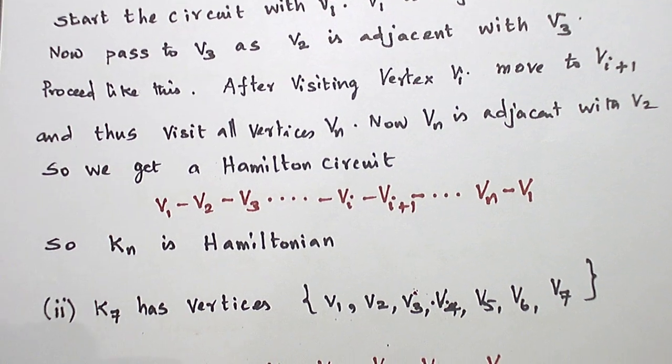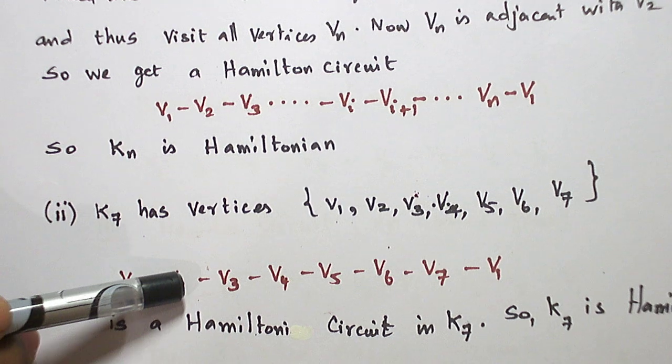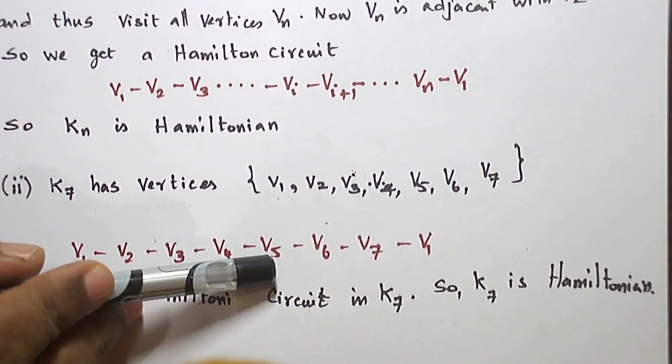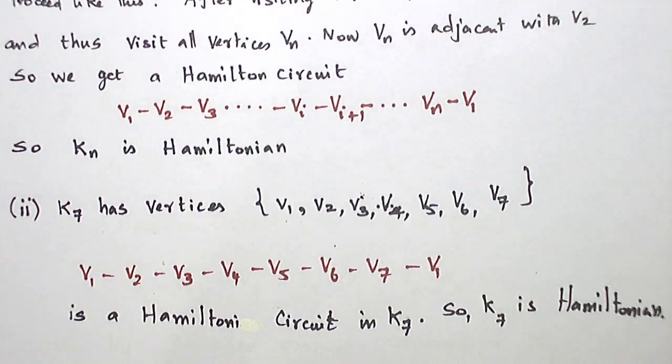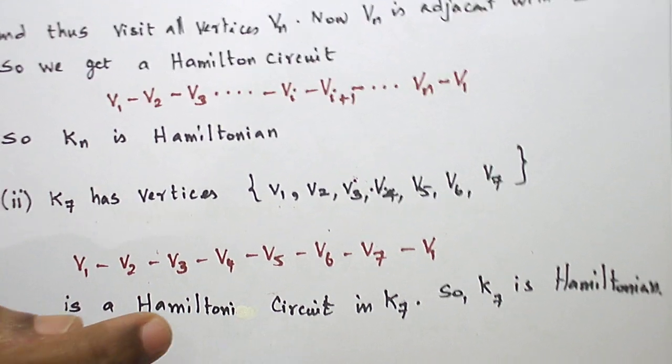K7 is also Hamiltonian. We can prove in this way: V1 is passed to V2, V2 is passed to V3, V3 is passed to V4, V4 is passed to V5, V5 to V6, V6 to V7, and V7 to V1. This is one of the Hamilton circuits in K7.